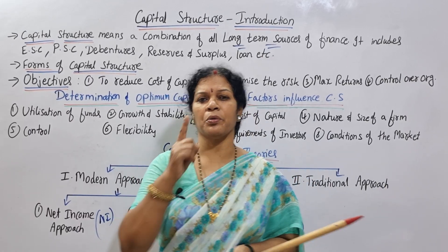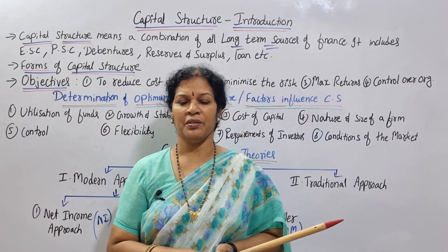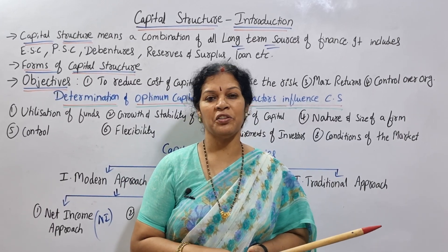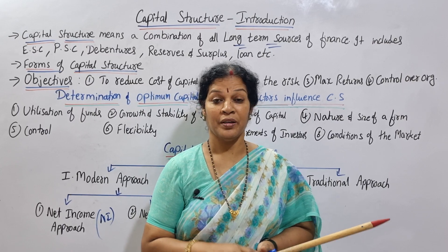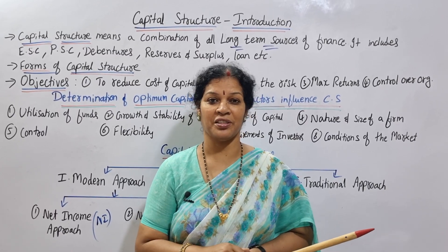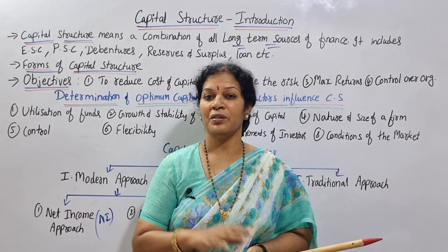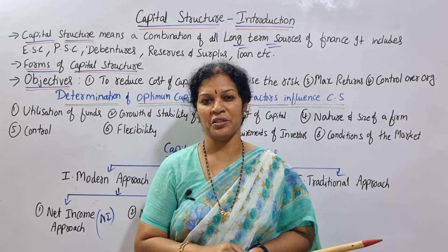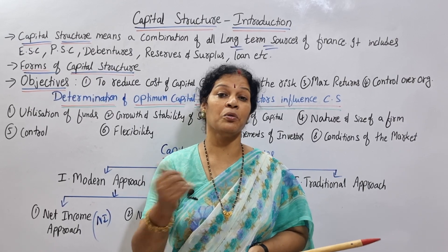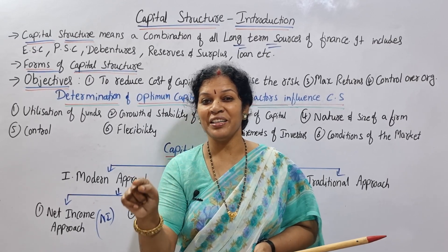Supposedly, I have 1 crore for company investment. If you have a 20% equity shares issue, 40% preference shares issue, 20% debentures issue, and 20% loan — that is how the capital structure is composed.